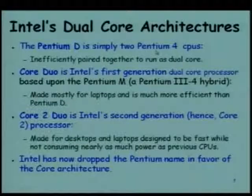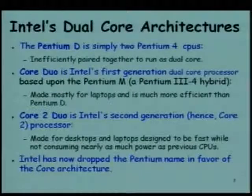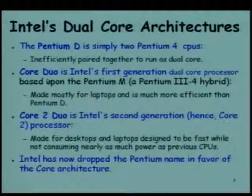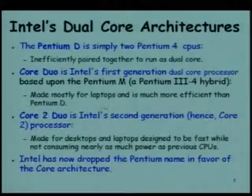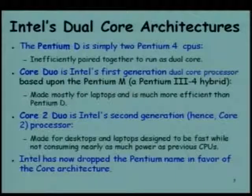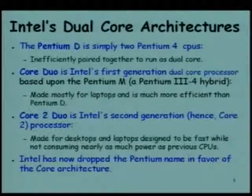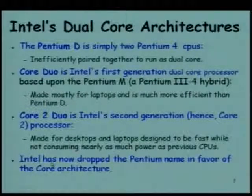Two CPUs were simply packed together with individual caches. Whereas the first generation dual-core processor really started with the Core 2 Duo, which is a derivative of the Pentium M. Pentium M was used for laptops, and then the second generation dual-core multi-core architecture was the Core 2 Duo. Intel is now using 'Core' processor branding rather than 'Pentium'.